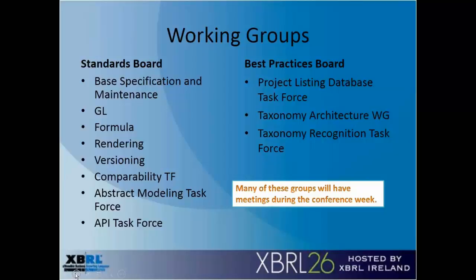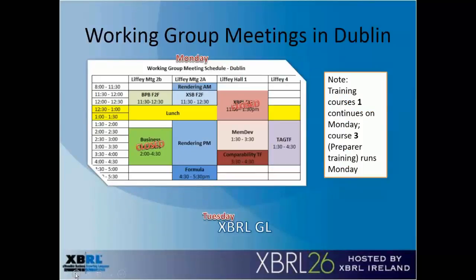Many of these groups will have meetings during the conference week, and you're invited to take part in many of them. On Monday, the Best Practices Group, the Rendering Group, the XBRL Standards Board, Member Development, Comparability, Taxonomy Advisory, Architecture, and Formula will all be having open meetings you're welcome to attend. There will also be some closed meetings. Training courses on Sunday and Monday will be concurrent with those working group sessions — Course 1 on business and IT worlds, and Course 3, the preparer training on inline XBRL.